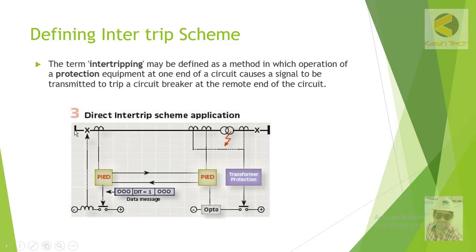Here you can see there are two substations — substation A and substation B. In substation A, a breaker is installed on the line, and at the receiving end there is a transformer.